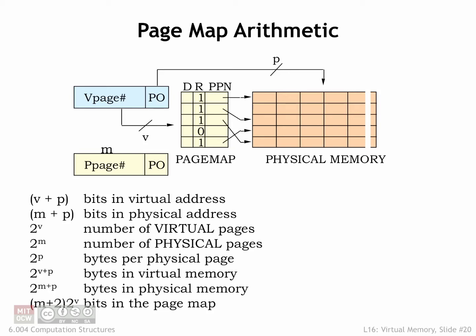There are three architectural parameters that characterize a virtual memory system and hence the architecture of the MMU. P is the number of address bits used for the page offset in both virtual and physical addresses. V is the number of address bits used for the virtual page number. And M is the number of address bits used for the physical page number.